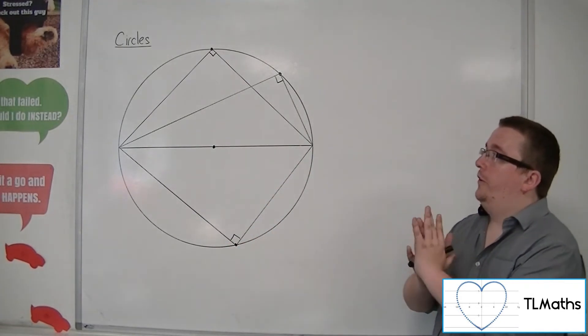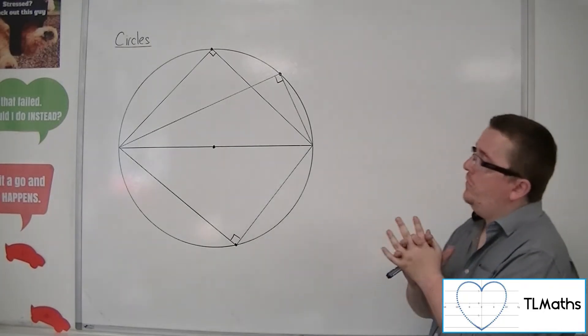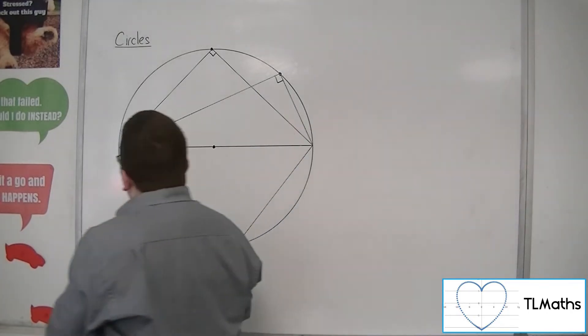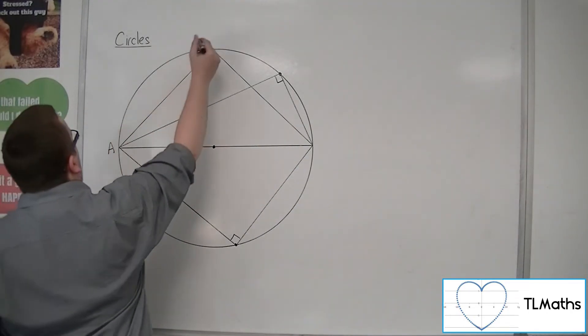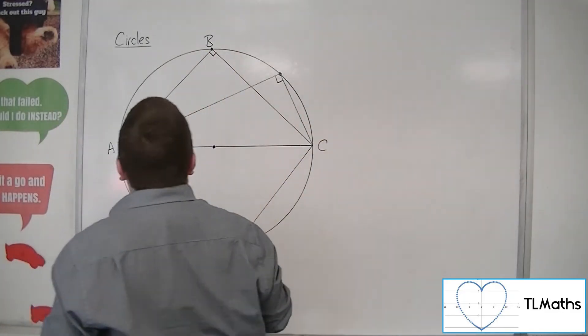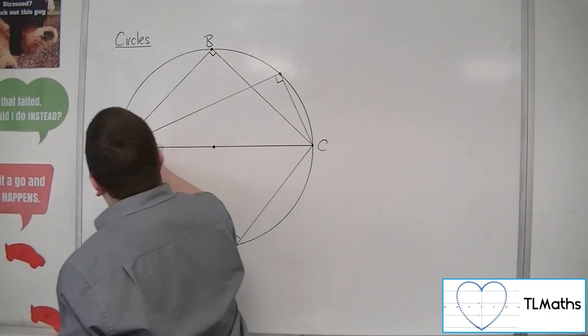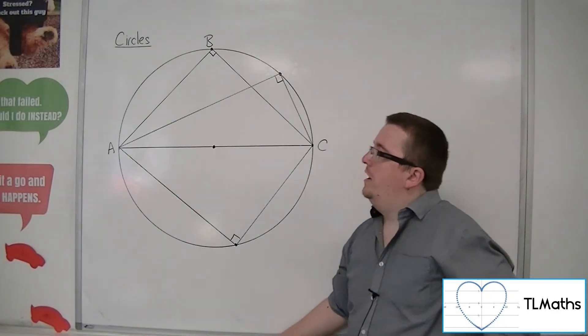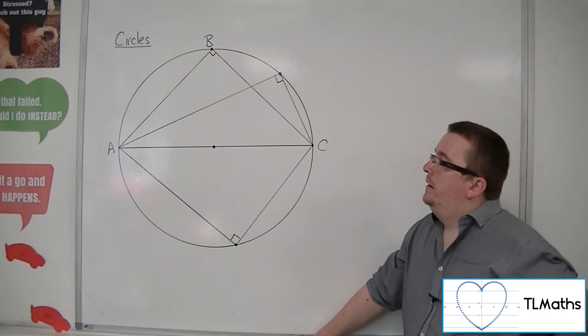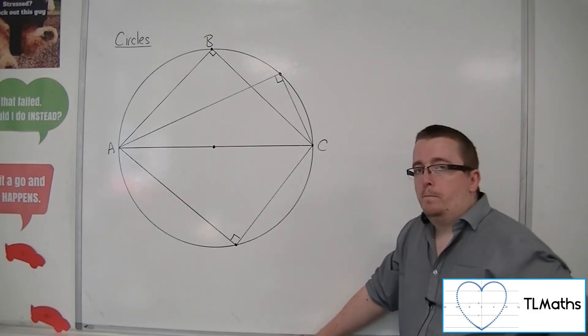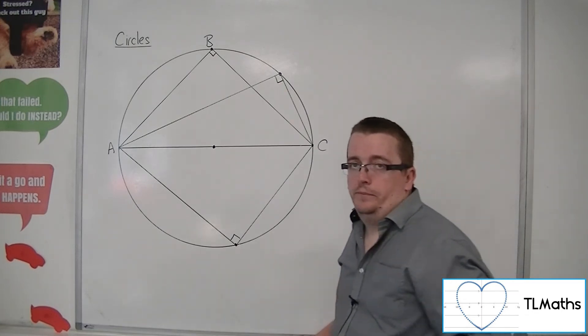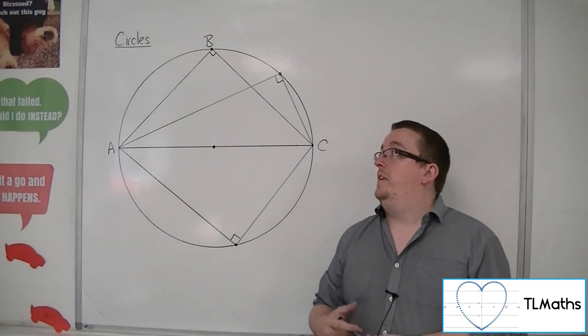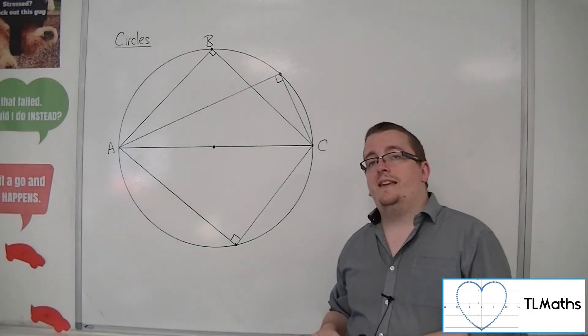Now, what use is that for us? Well, it allows us to solve a problem because if you know that you have three points on a circle, and you know that AB and BC meet at right angles, so you know that those two chords are perpendicular, then that will mean that AC has to be a diameter.